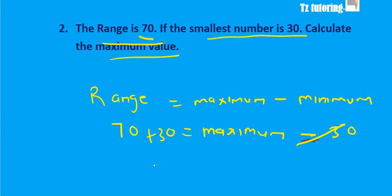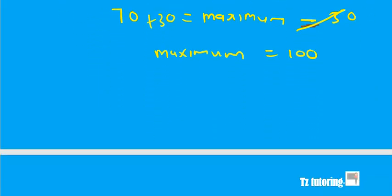So to cancel it on this side, we add it on the other side. And of course, 70 plus 30 is 100. So the maximum value is 100.